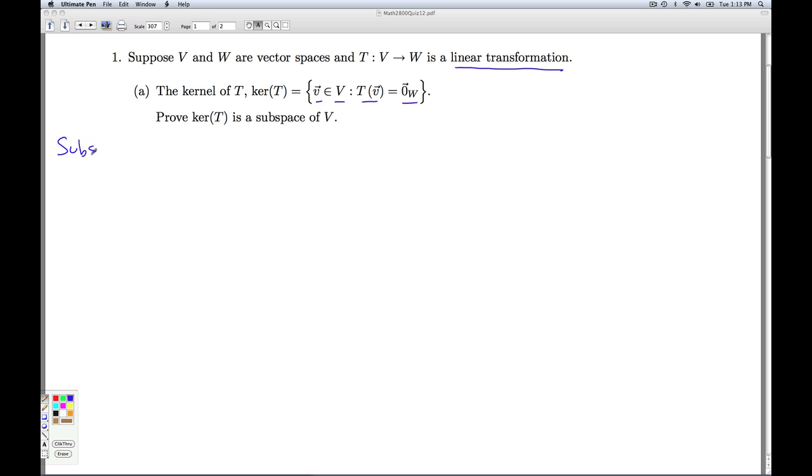So we go back to our subspace criteria. What's our subspace criteria? We're just going to use kernel T here. So we need to check two things. Is the zero vector in V in the kernel of T? And two, if I have two vectors that are in the kernel of T, is any linear combination in there as well? So two questions we have to answer.